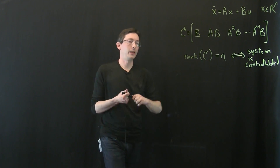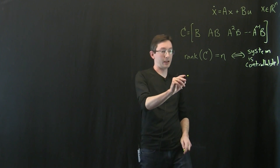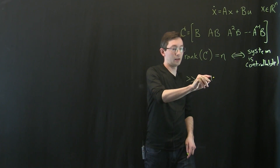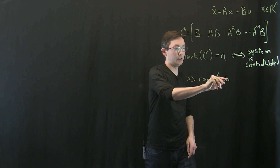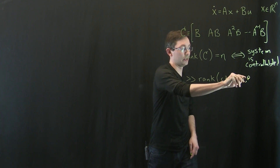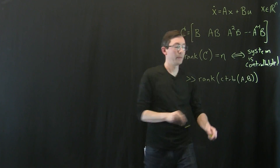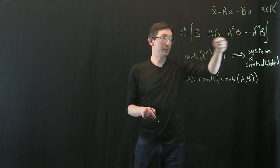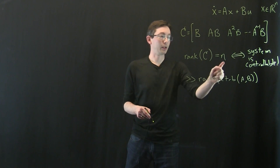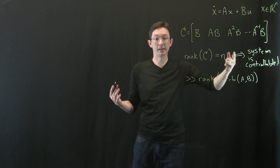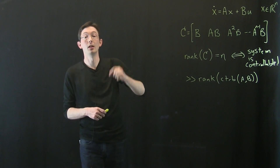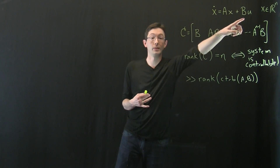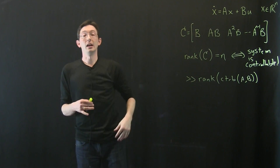This is also very easy to check in MATLAB. In MATLAB I would literally type rank of ctrb(A, B). The ctrb(A, B) command gives me this matrix and rank checks the rank. If this equals n, then the system is controllable. It's a very simple binary test of controllability that you can use in MATLAB for your particular system.